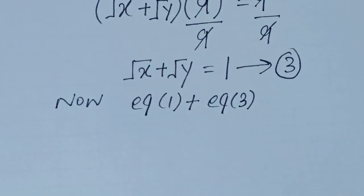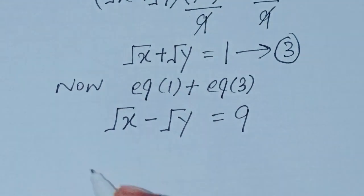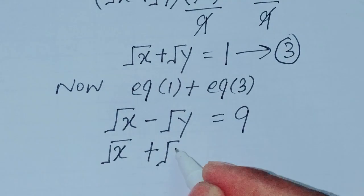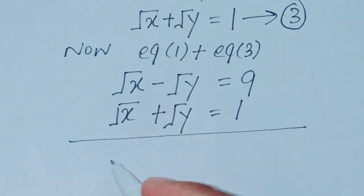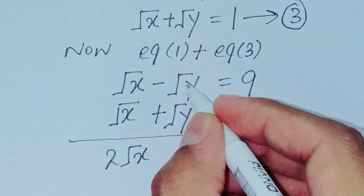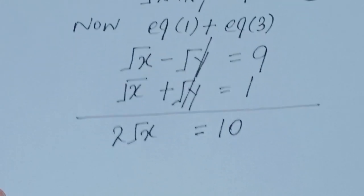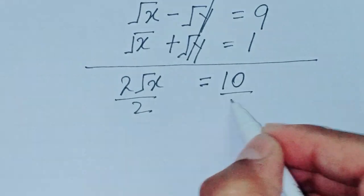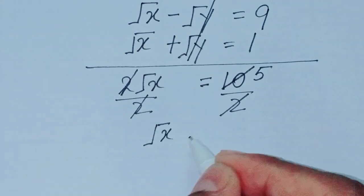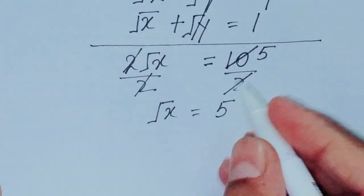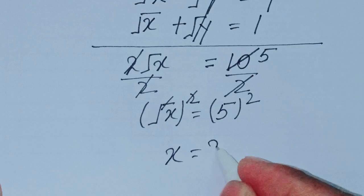Adding equation 1 and equation 3: square root of x minus square root of y equals 9, and square root of x plus square root of y equals 1. The square root of y terms cancel each other. We get 2 times square root of x equals 9 plus 1, which is 10. Dividing both sides by 2, square root of x equals 5. Squaring both sides, x equals 25.